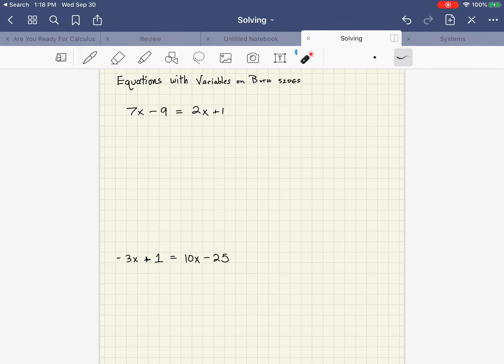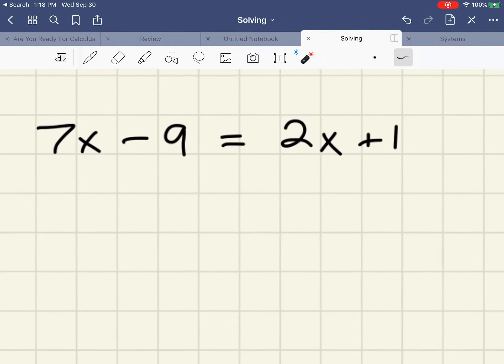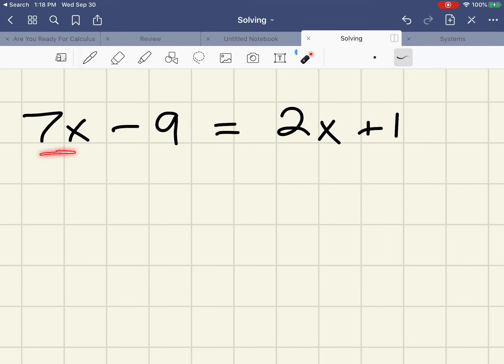This is a video on solving equations with variables on both sides. As you can see, I've got two examples that we'll go through. We have 7x over here but we also have 2x over there. The problem is, in previous videos you might not have seen this 2x here. We're simply going to turn this into a two-step problem.